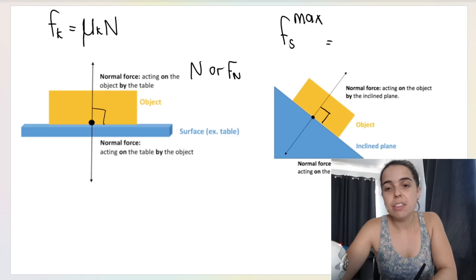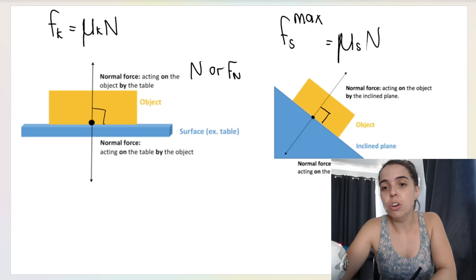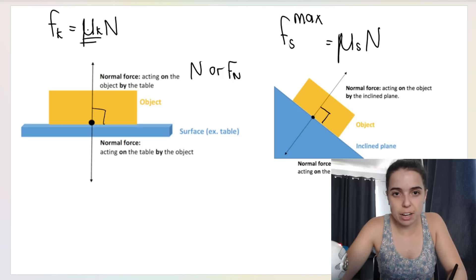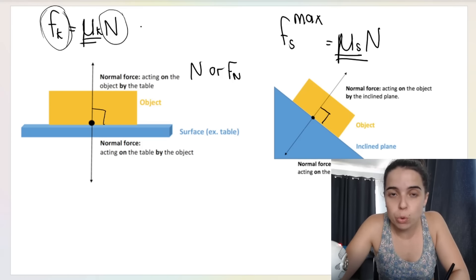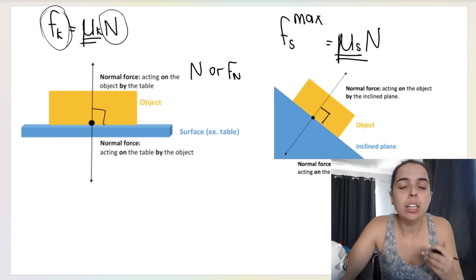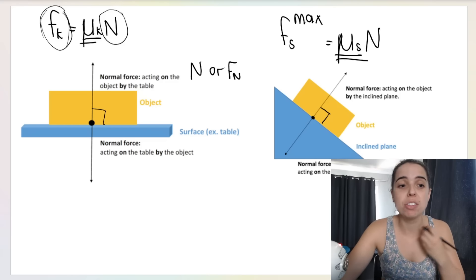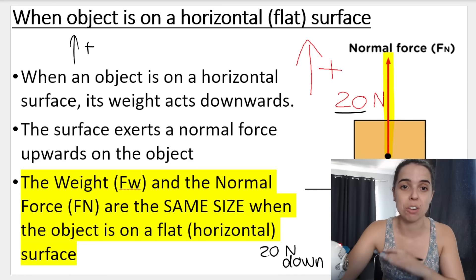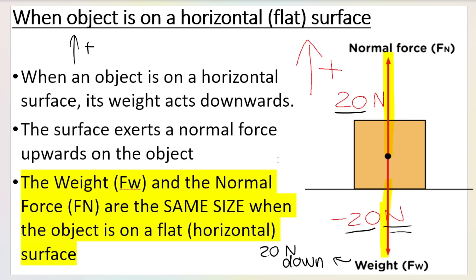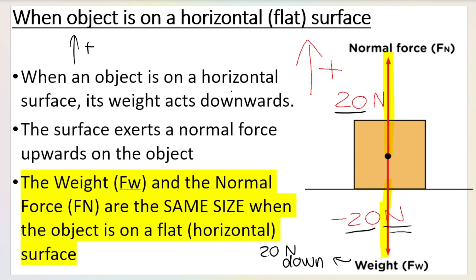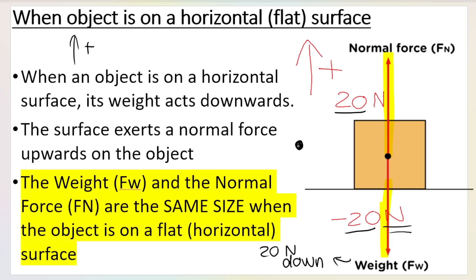One of the key reasons to know how to calculate the normal force is that calculating it differs depending on the situation. It's important because if you want to calculate kinetic friction, that formula requires you to know the normal force. Similarly, to calculate maximum static friction or static friction, that formula also requires the normal force. So in order to calculate friction, you need to know the normal force first.